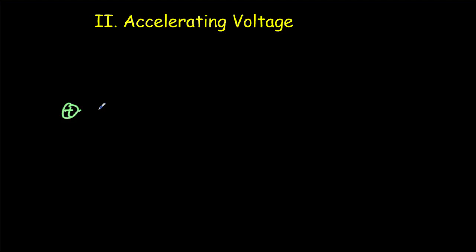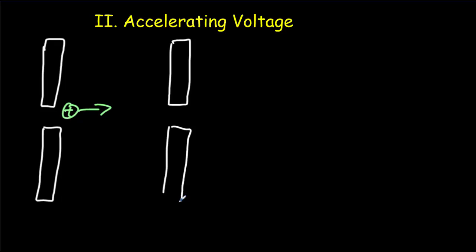The positive ions pass into this second region. They enter an opening between parallel plates - one on the left and another on the right.